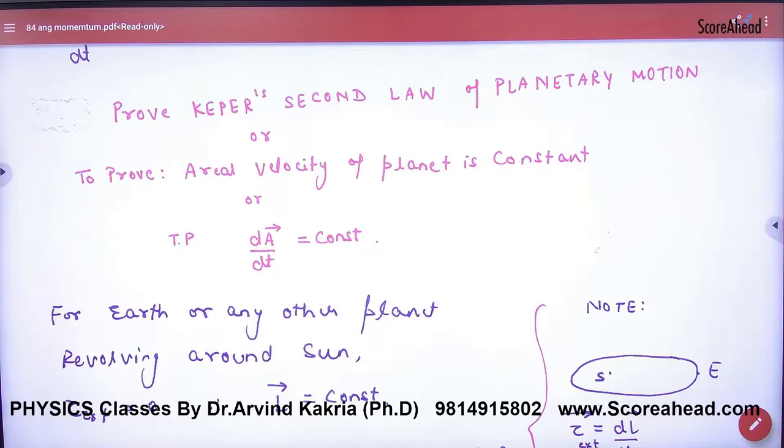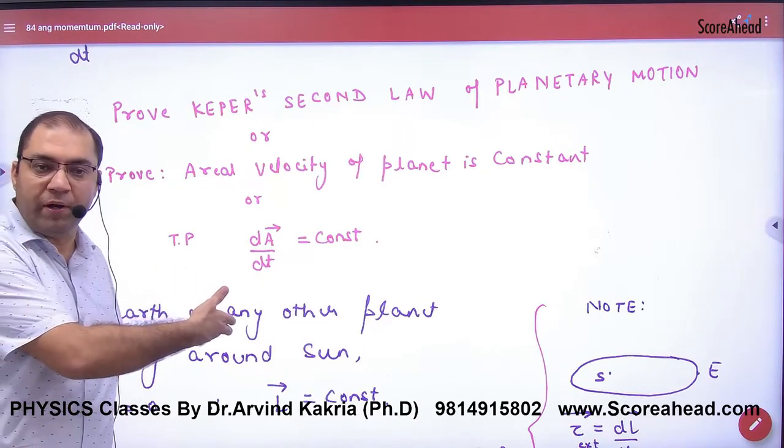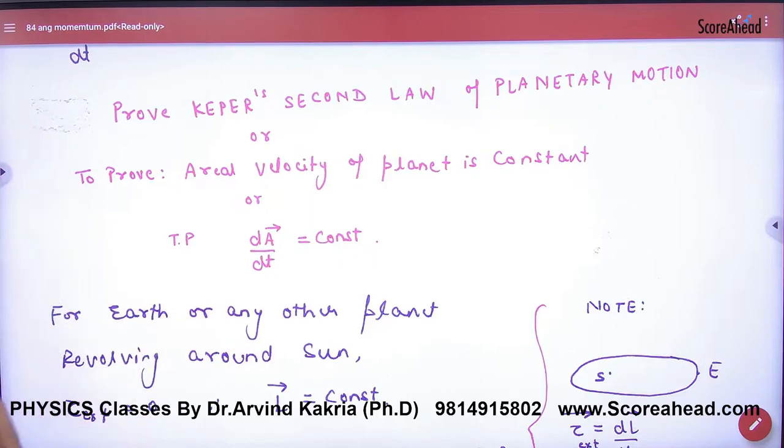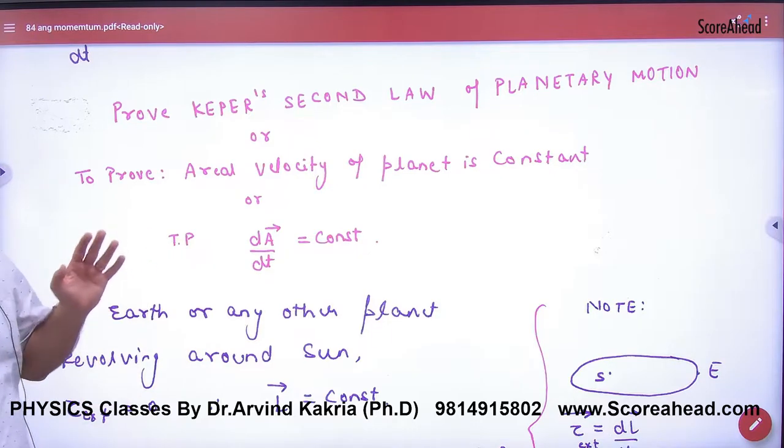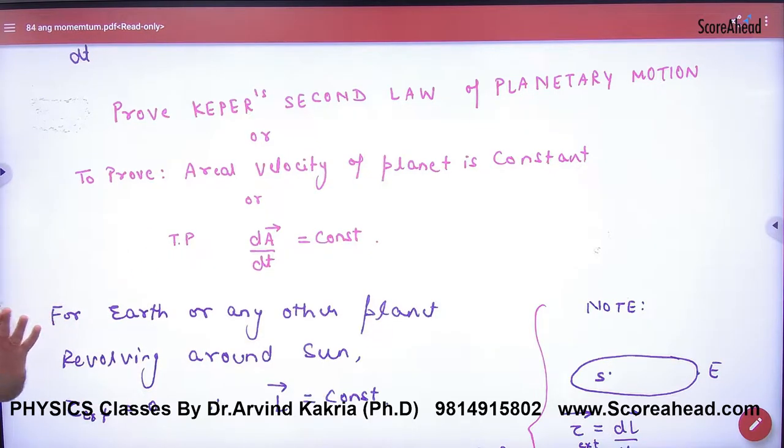So proofs are important. This is going to come in the paper. It's important; this will come in three numbers. Prove Kepler's second law of planetary motion. The question again: prove Kepler's second law of planetary motion.